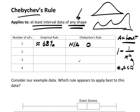So Chebyshev's rule technically says you have at least nothing at one standard deviation — that's pretty useless. It means you could have anywhere from nothing to all the data, which is totally useless. So Chebyshev's rule, we don't really even start applying until we hit two standard deviations.